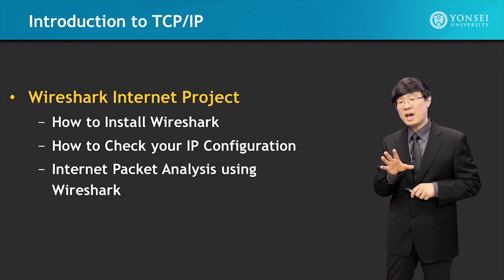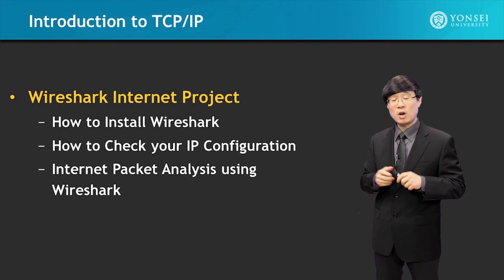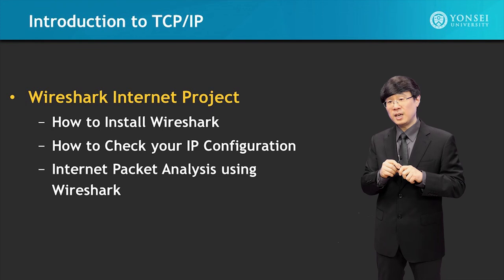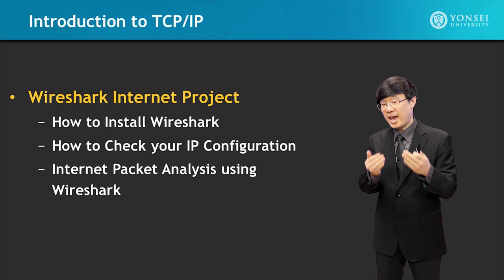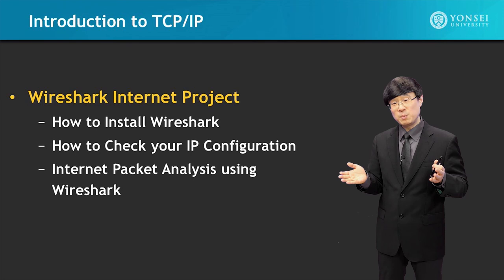To wrap this course up, we have a very easy project that we're going to be doing together — the Wireshark Internet Project. First, I'm going to show you how to install Wireshark, and then how to check your IP configuration on your computer. The ipconfig function using your command window has always been on your computer, and now you'll get to learn how to use it. Then, using the Wireshark program, we're going to use it to analyze the overall Internet connections we've been using so far.